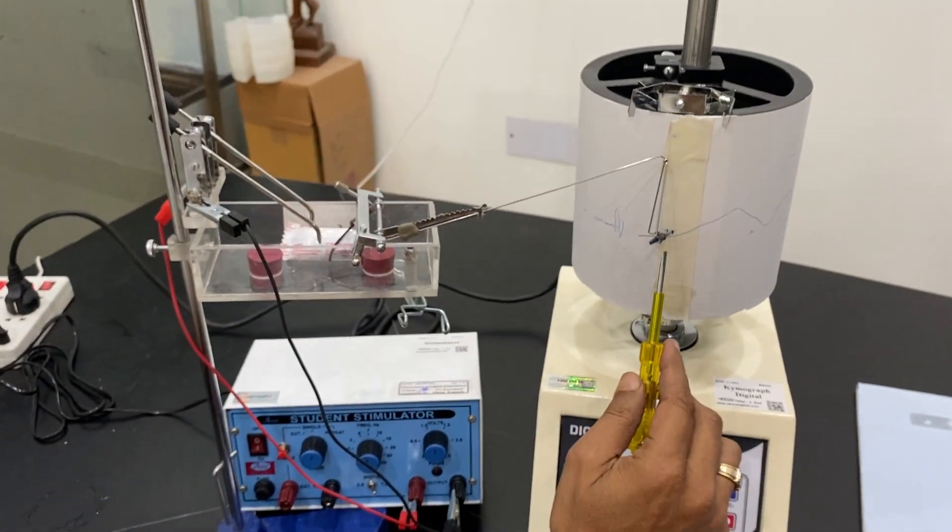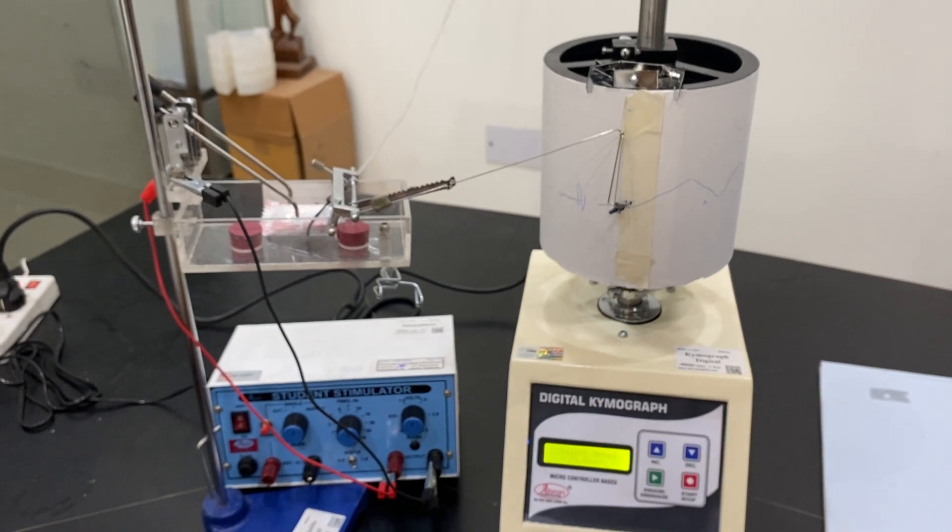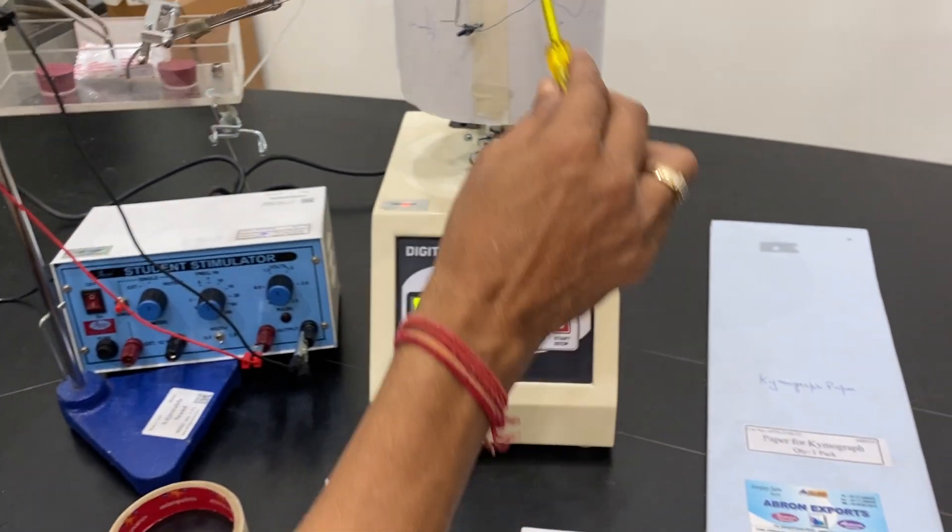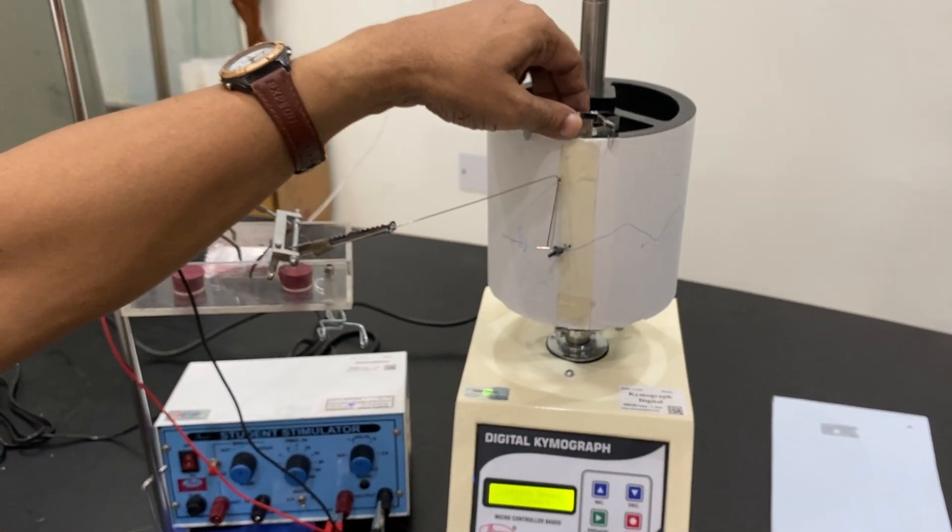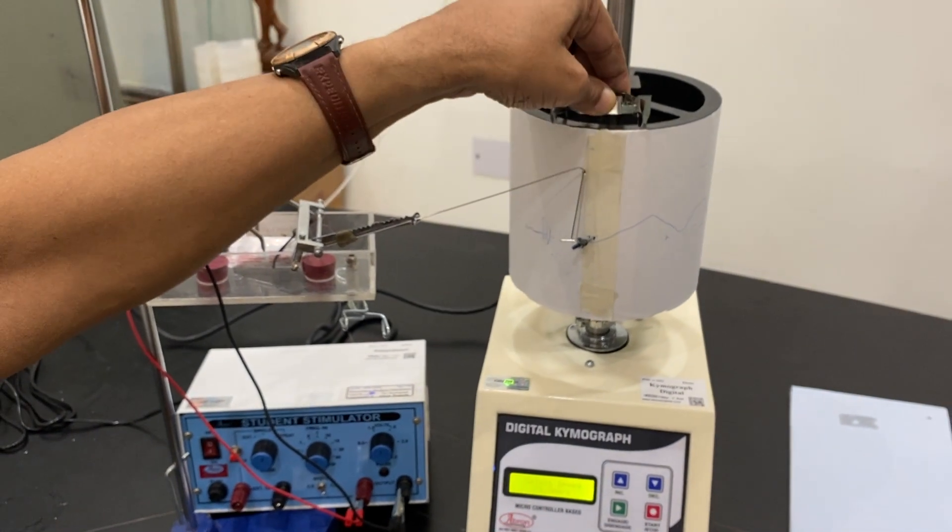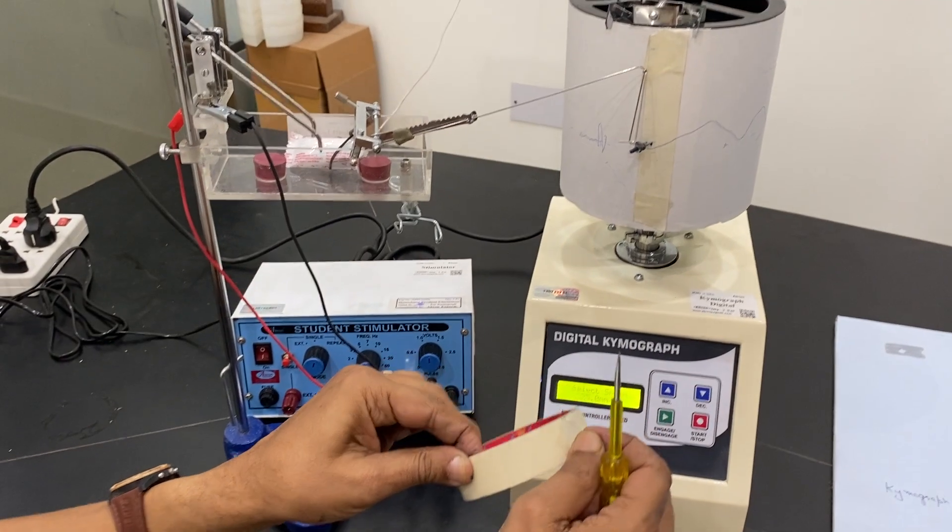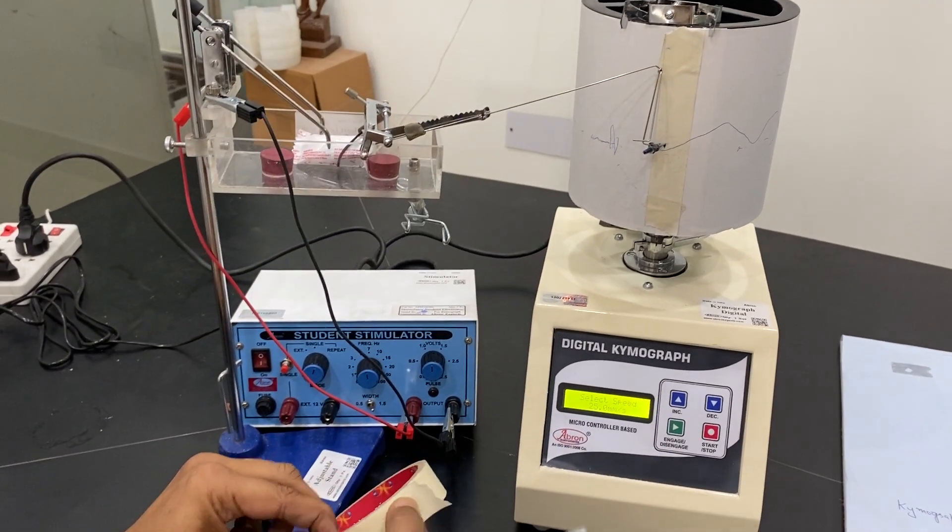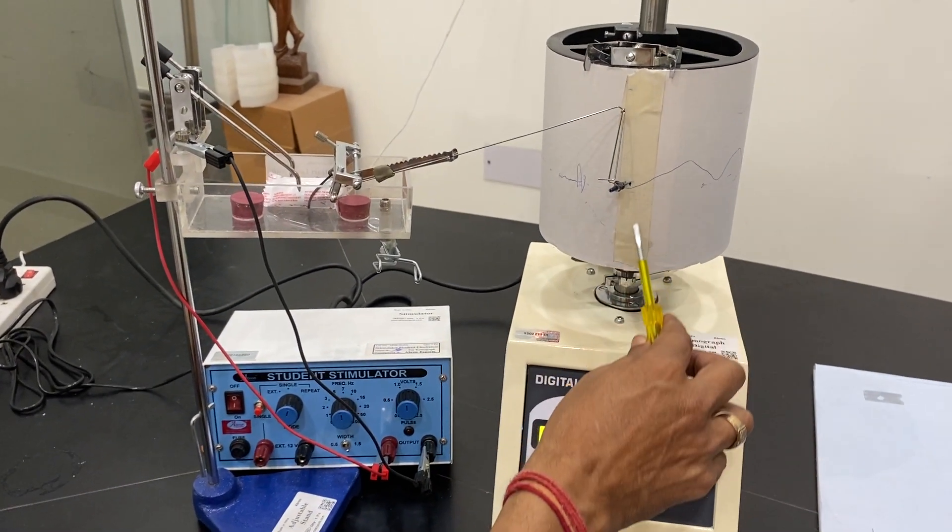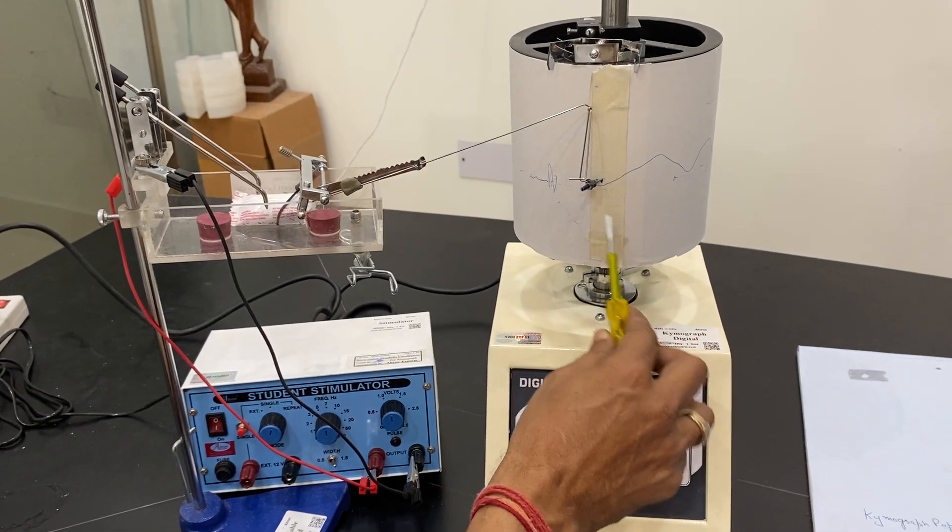Now this frontal lever will, the paper is attached. We have got the Kymograph paper and it is attached with the recording drum with the clip. But I have used a paper tape which is available in the market locally also in your area maybe.